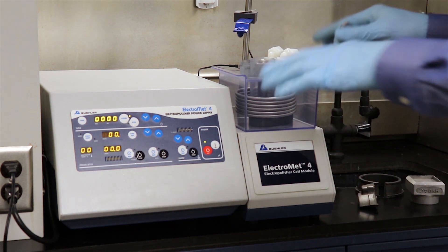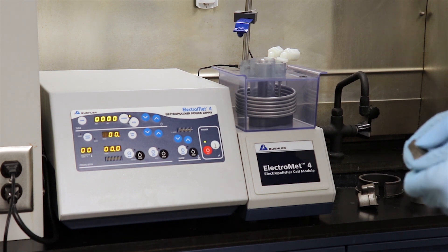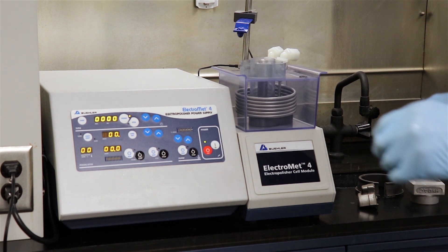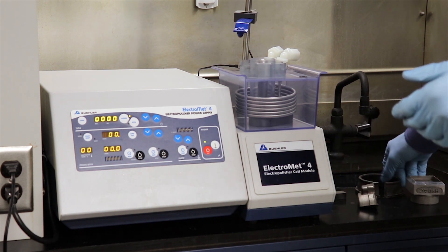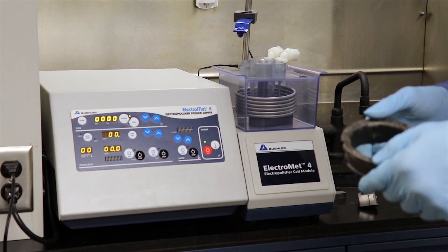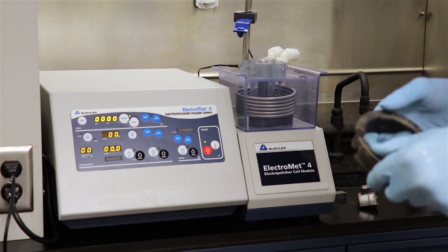You can do an electropolishing preparation cycle in less than 30 seconds in most cases and there's no need to go through the process of mounting or grinding and polishing that you traditionally would with a standard grinder polisher.